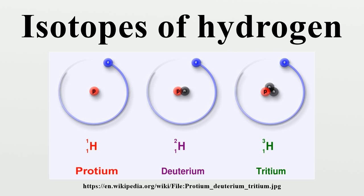Hydrogen-7 (7H) consists of a proton and six neutrons. It was first synthesized in 2003 by a group of Russian, Japanese, and French scientists at RIKEN's RI Beam Science Laboratory by bombarding hydrogen with helium-8 atoms. In the resulting reaction, all six of the helium-8's neutrons were donated to the hydrogen's nucleus. The two remaining protons were detected by the RIKEN telescope, a device composed of several layers of sensors positioned behind the target of the RI beam cyclotron. Hydrogen-7 has a half-life of 23 yoctoseconds.